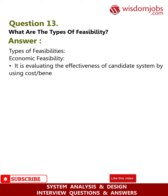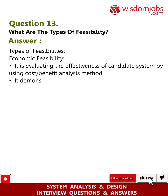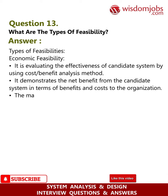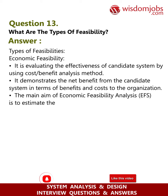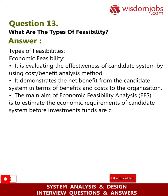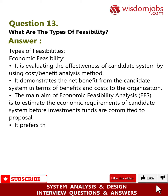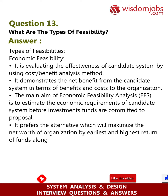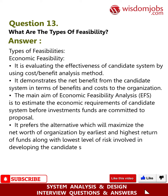Question 13: What are the types of feasibility? Answer: Types of feasibilities. Economic feasibility: it evaluates the effectiveness of a candidate system using cost/benefit analysis. It demonstrates the net benefit from the candidate system in terms of benefits and costs to the organization. The main aim of economic feasibility analysis (EFA) is to estimate the economic requirements of the candidate system before investment funds are committed to the proposal.